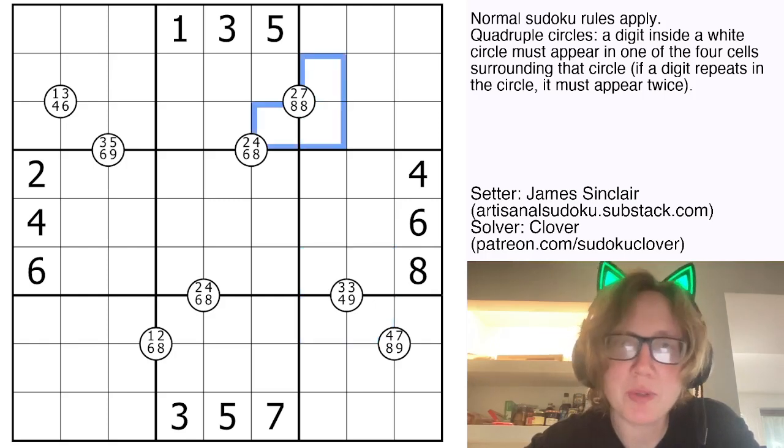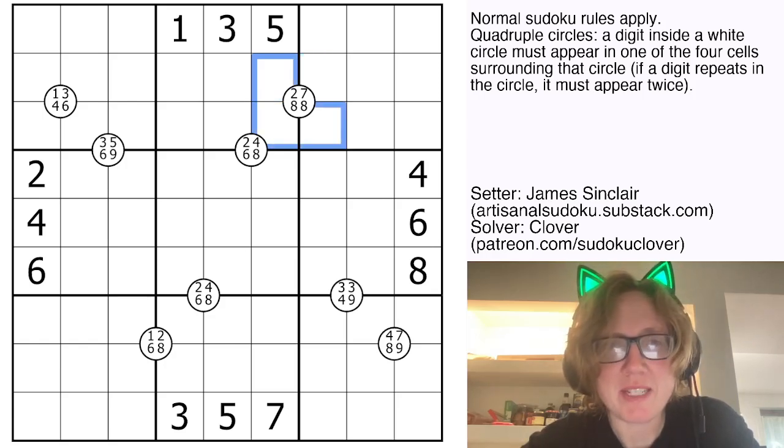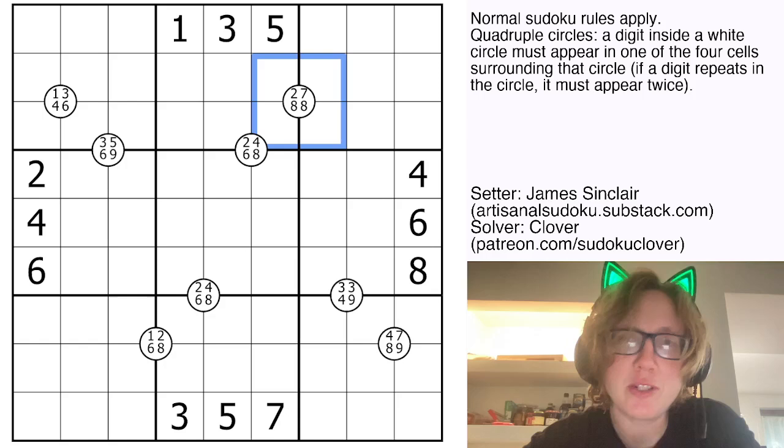So for example we have a two, seven, eight, and eight here. And that tells us that the digits surrounding this white circle have to include two, seven, and two eights.